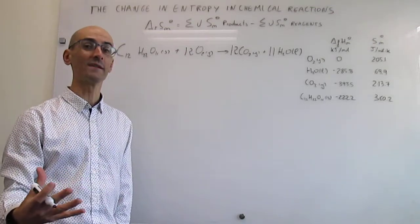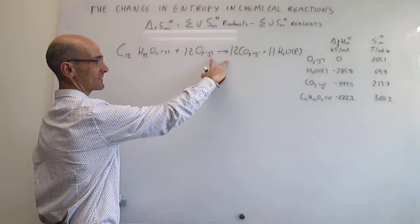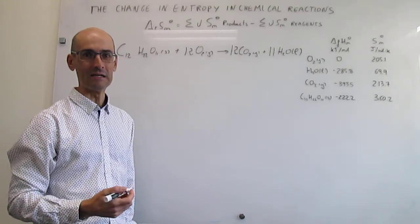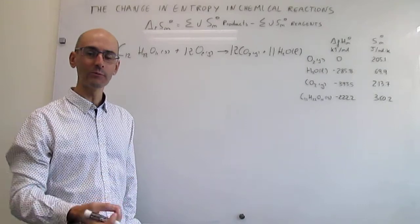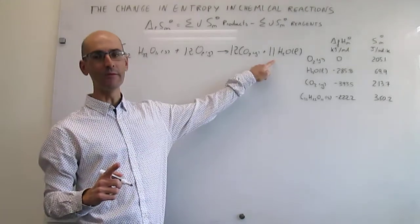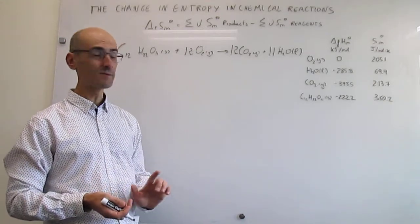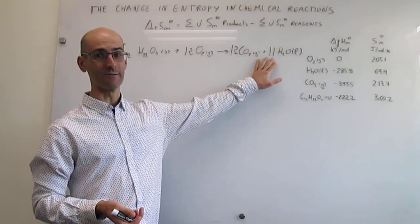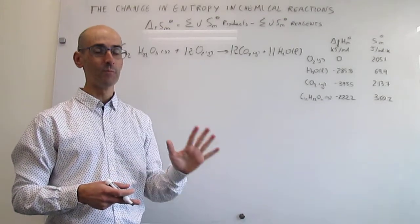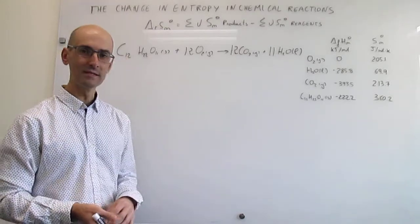Before punching in any numbers, we can predict the sign. Looking at the number of moles of gas: CO2 and O2 both have a stoichiometric coefficient of 12, so the gas moles cancel out and that criterion doesn't apply here. Looking at the remaining species, we have one mole of a solid converting to 11 moles of a liquid. Liquids are generally more entropic than solids, and here we have 11 molecules of liquid for each molecule of solid — so this reaction generates dispersal of matter, and we expect the change in entropy to be positive.